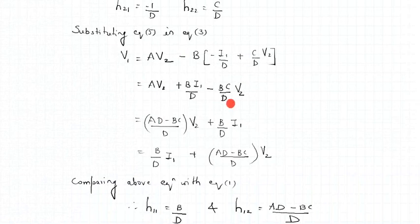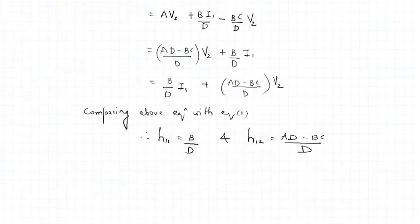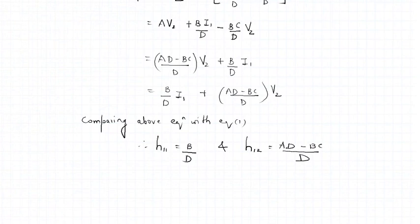We get the equation of V1 in terms of I1 and V2. Comparing with equation 1, we get H11 = B/D and H12 accordingly. The complete substitution and collection of like terms is shown in the derivation. With this, we have completed all the conversions of hybrid parameters in terms of Z, Y, and ABCD parameters.